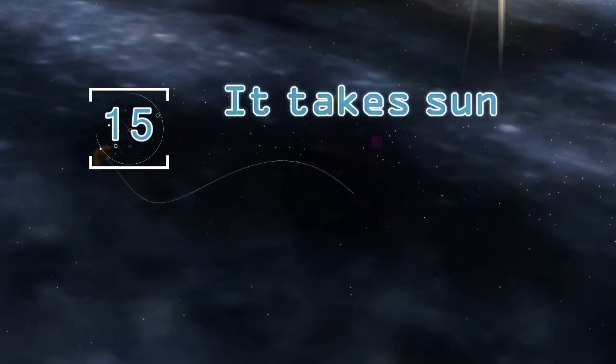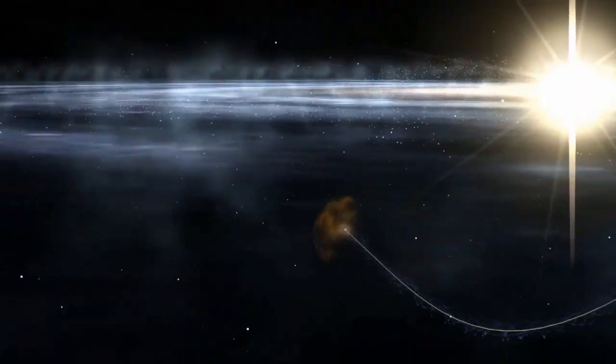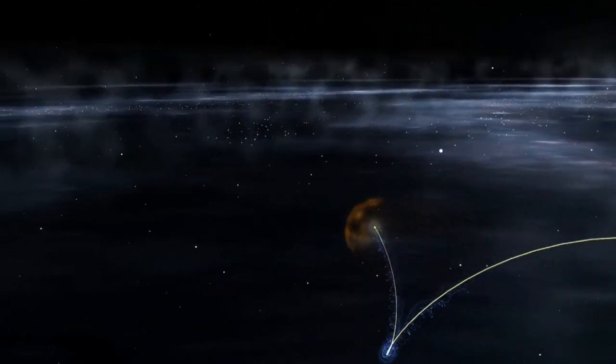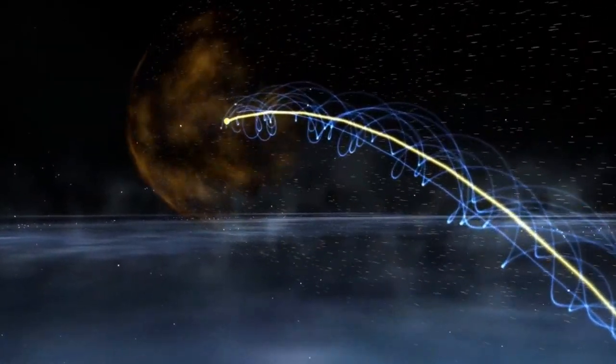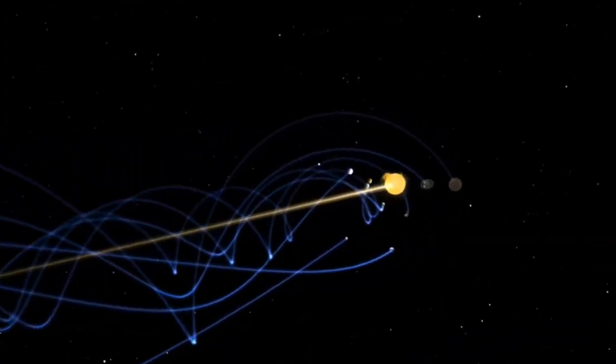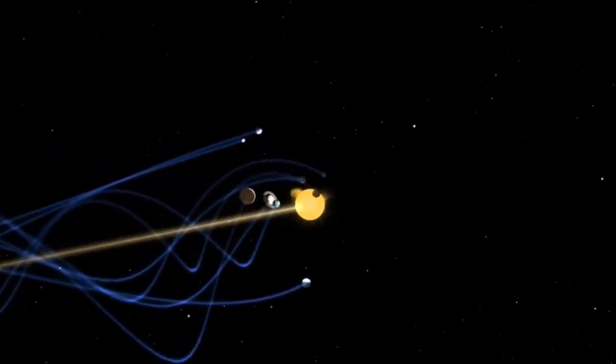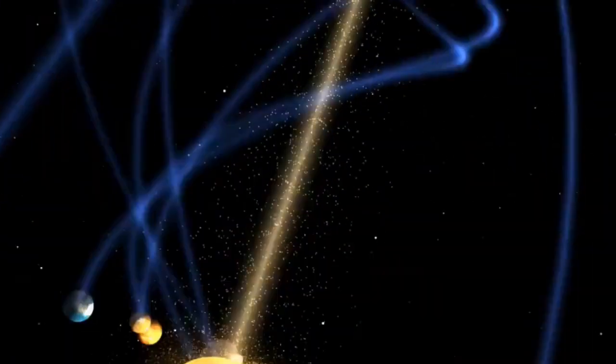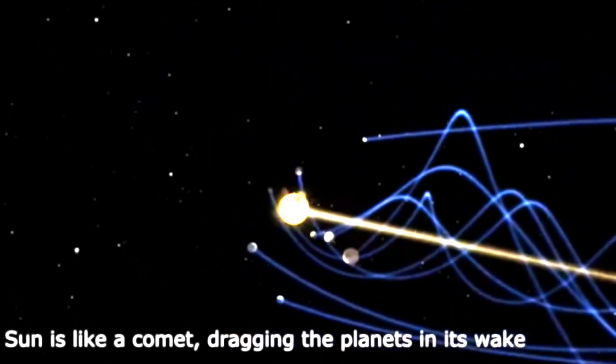It takes the sun hundreds of millions of years to orbit. We've talked about how long it takes Venus to orbit the sun, so it's only fair that we discuss how the sun itself rotates. Believe it or not, it takes the sun 225 million years to complete its journey around the center of the Milky Way. It's safe to say dinosaurs were around the last time the sun completed a full orbit.